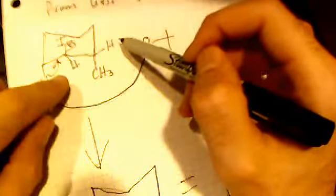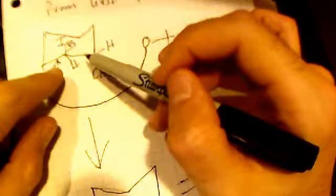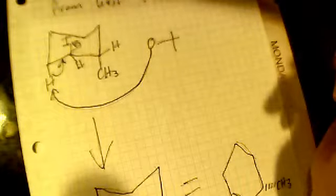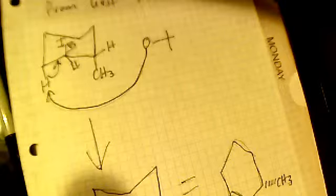This tert-butoxide could take this hydrogen and the double bond would be formed here and that would be a more substituted alkene. But it's... That would be syn, right? It would be a syn elimination. So that's less favorable.